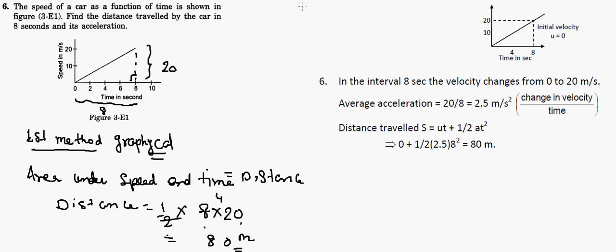Let's solve this using the second method. If you're talking about this problem, the speed of the car as function of time is shown in figure. Initially the speed is zero, finally at eight seconds the speed is 20 meters per second. In this interval, the time is eight seconds and the velocity is from zero to twenty.